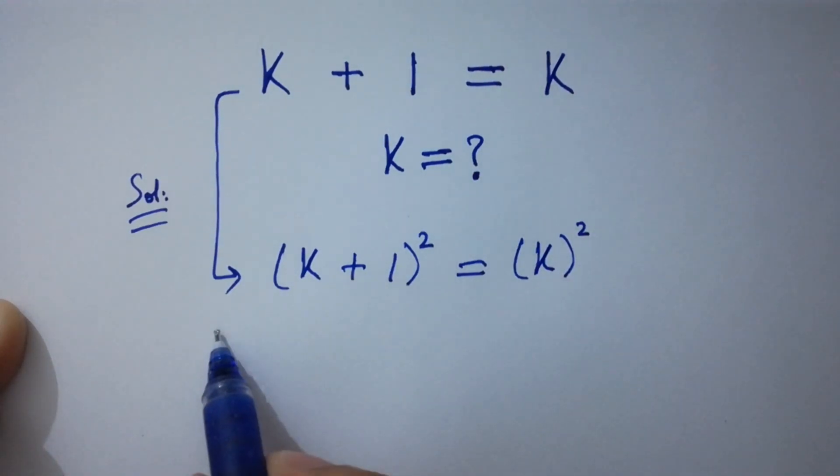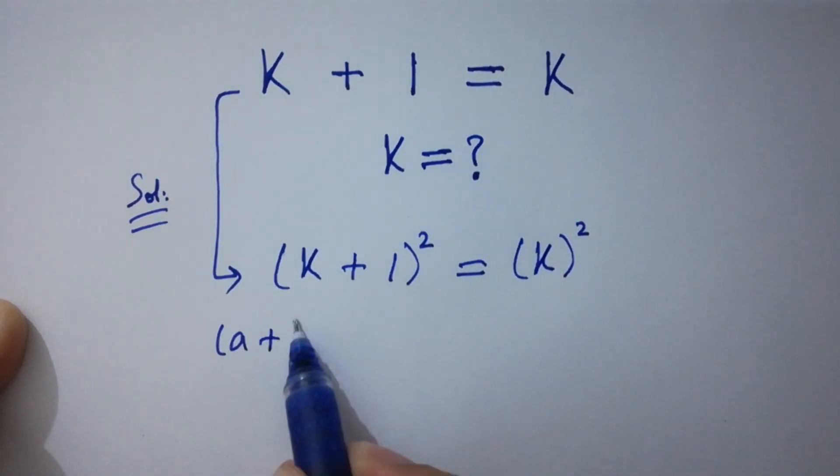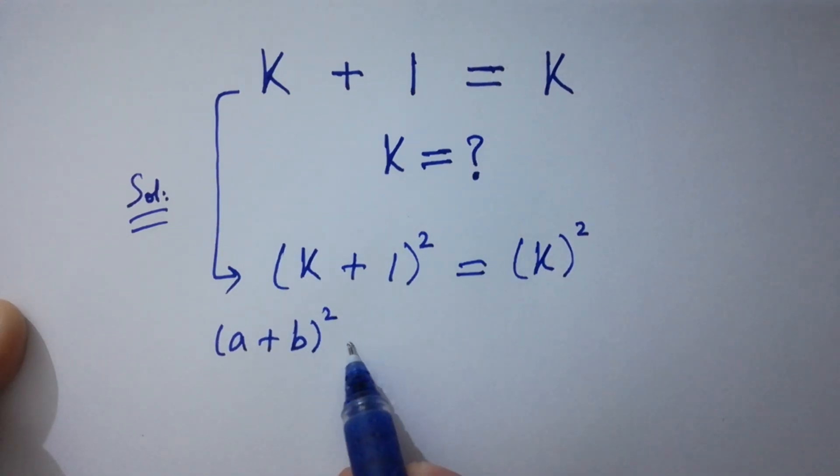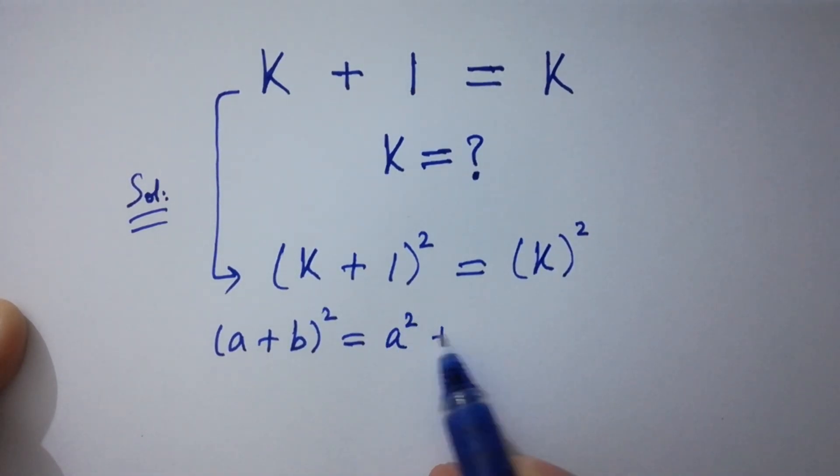We know the formula of a plus b all square which is equal to a square plus b square plus 2ab.